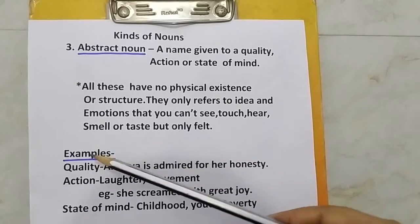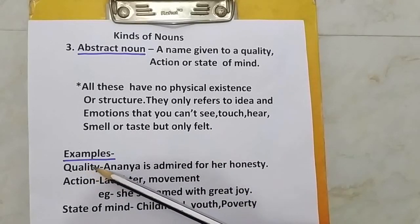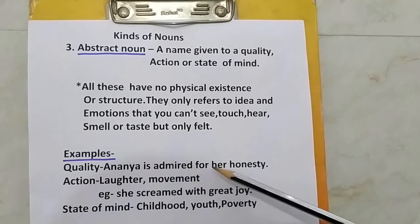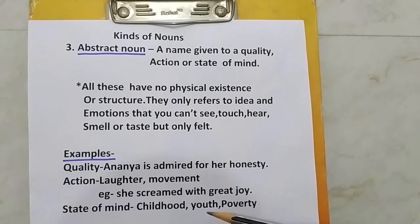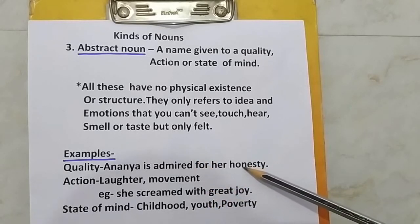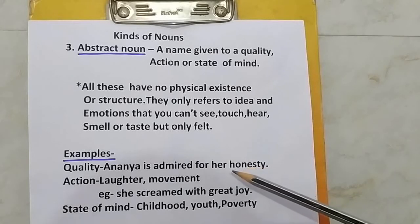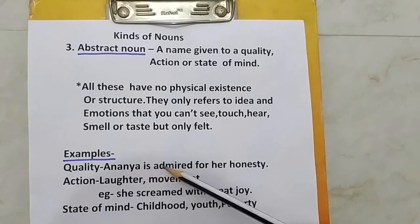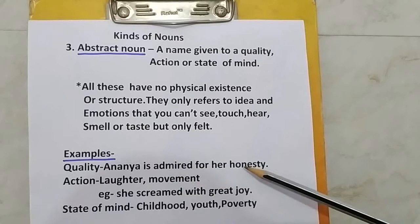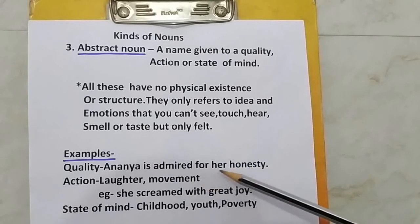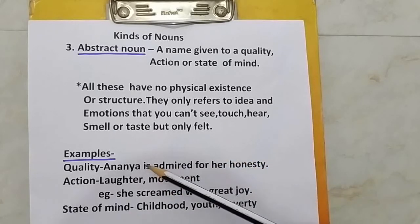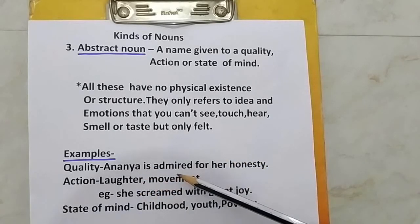Some more examples. Quality: Ananya is admired for her honesty. In this sentence, the word honesty is a quality of a person. Ananya is admired for her honesty — so honesty here is the quality of a person, and because of her honesty she is admired by all.